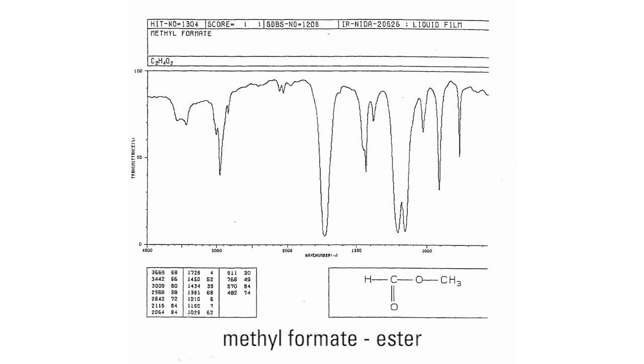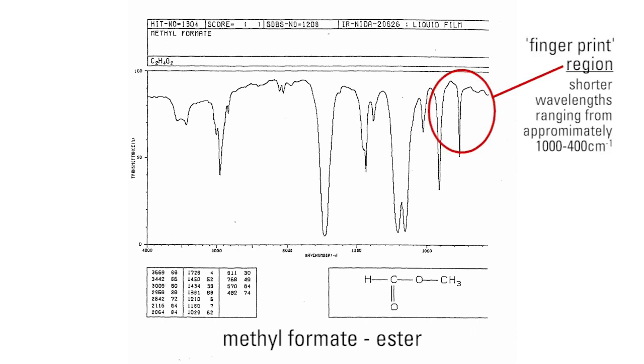In order to interpret IR spectra, it is helpful to split up the x-axis into several regions that are characteristic of common organic functional groups. Organic chemists generally refer to the shorter wavelengths ranging from approximately 1,000 to 400 centimeters to the minus 1 as the fingerprint region.